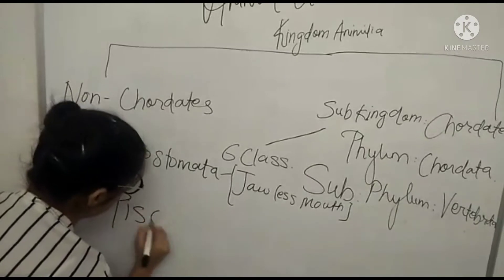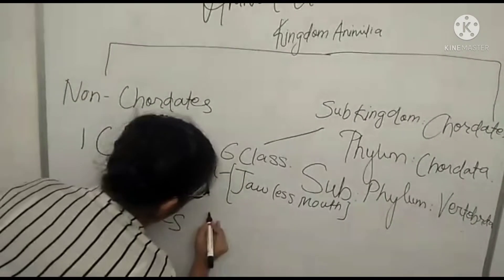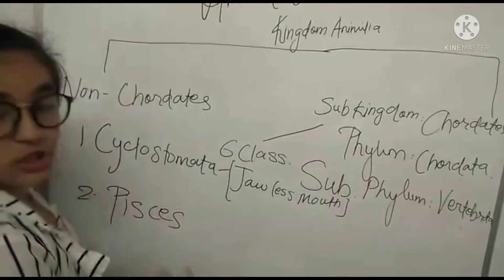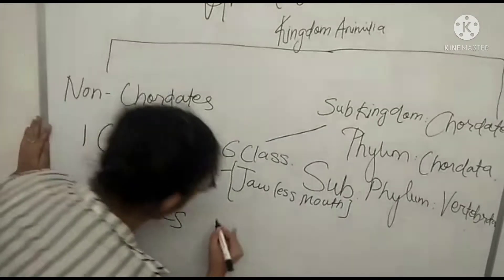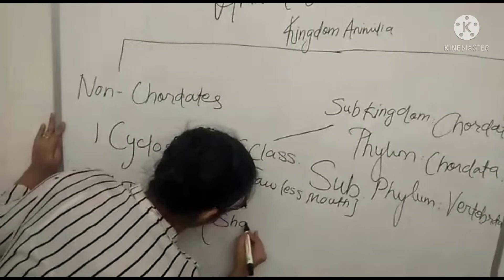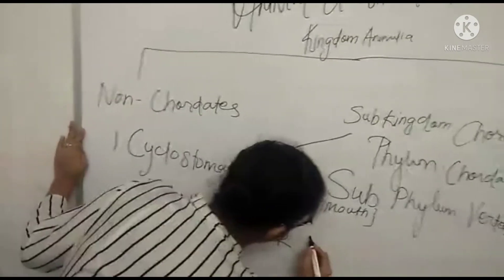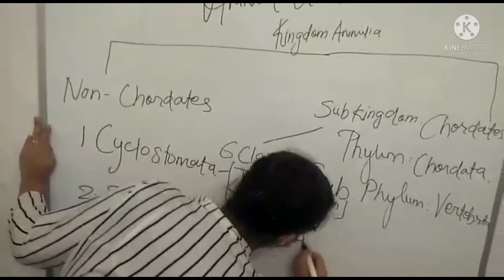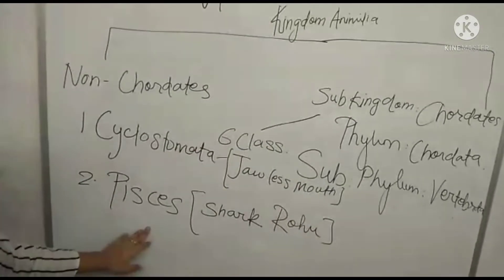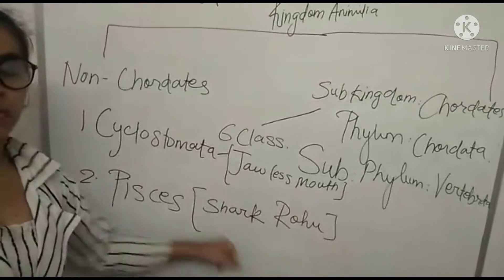This was our first one and our second one is Pisces. The example here is shark and robo. These both animals are the example of Pisces.